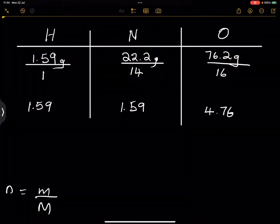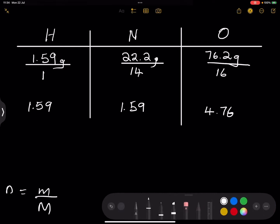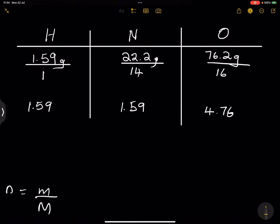Now what we do, just like we did in the previous one, you take the lowest number and you divide each of the number of moles by the lowest number. So the lowest number is 1.59, the lowest number of moles in that case. So that would give us, divided by 1.59, and we divide by 1.59, and of course we do that even to the last one.